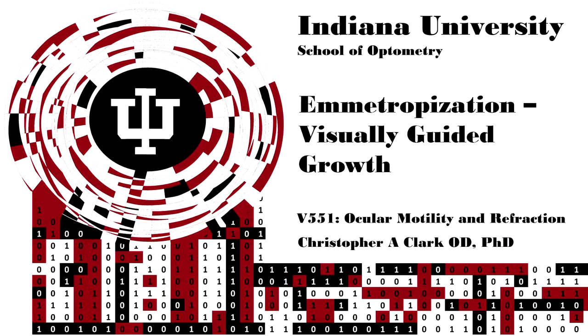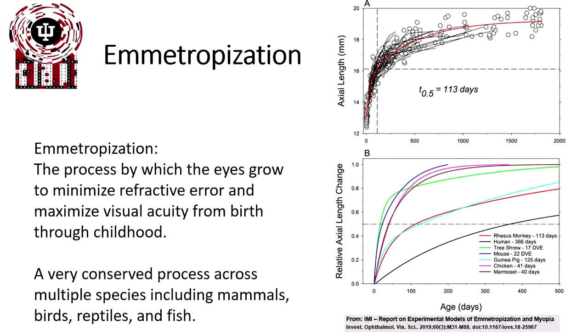This is emetropization: visually guided growth for V551, ocular motility and refraction. Emetropization is the process by which eyes grow to minimize refractive error and maximize visual acuity from birth throughout childhood.